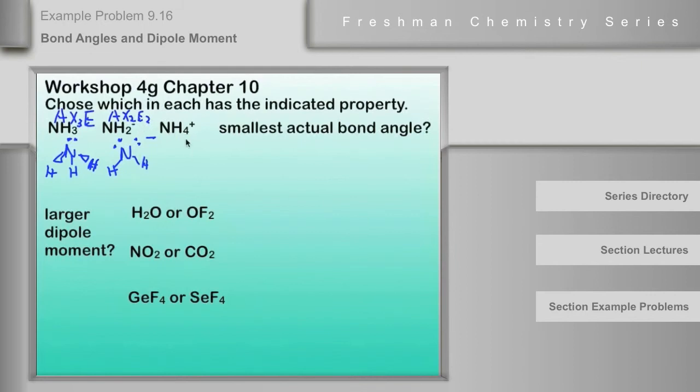And then if we look at NH4 plus, it's a positive ion. And what is the shape class for NH4 plus? AX4. So what is the actual bond angle for an AX4 case? 109.5 degrees, the tetrahedral angle.